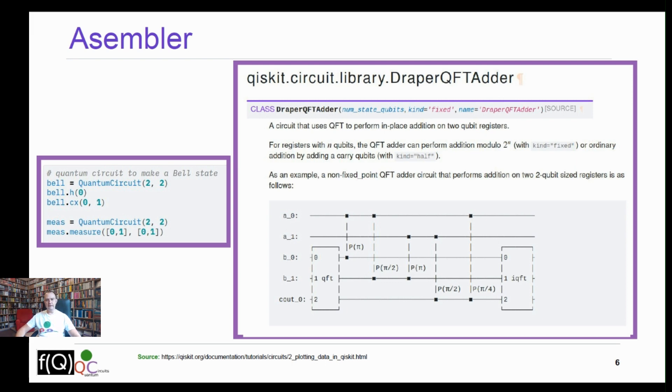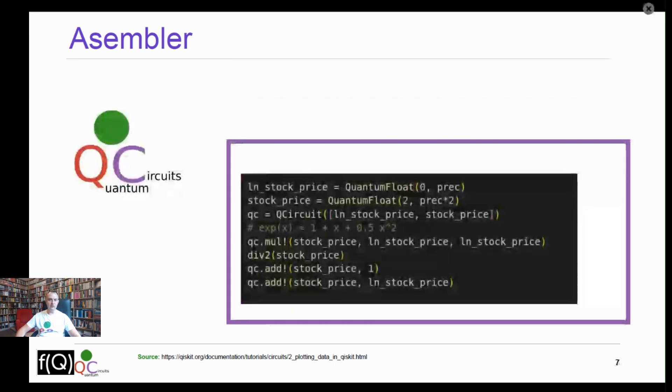Also, there are implementations of automatic functions, for example, the quantum Fourier transform. But you have to be very careful using it. Let's see this on a simple example. Our goal is to calculate the exponential function using the second order Taylor expansion. Here we can see the implementation in the QuantumCircuits library.